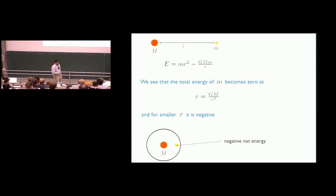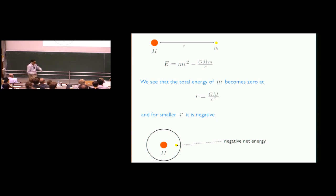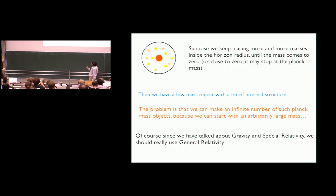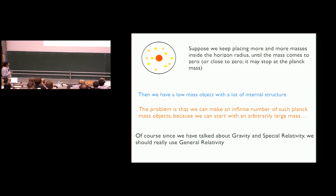If you take the mass M by itself it had some energy, then you add an extra particle of mass m and the total energy has gone down. Normally if you add something, total energy goes up — but here total energy goes down. You can keep putting more and more particles in and the total mass will keep going down, potentially to zero or maybe something like the Planck mass. So you end up with a low-mass or massless object that has a huge amount of internal structure, all because the gravitational PE is negative and can cancel the rest mass energy.